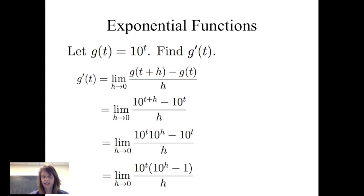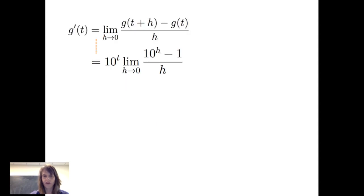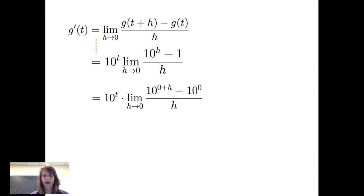I see that I have a common factor of 10 to the t in the numerator. As I factor that out, I see that 10 to the t does not depend at all on h. So therefore I can make that a coefficient of my limit. I've got 10 to the t times the limit as h goes to 0 of 10 to the h minus 1, all over h. I'm going to rewrite that limit expression as 10 to the t times the limit as h goes to 0 of 10 to the 0 plus h minus 10 to the 0, all over h. Which is just the limit definition of derivative — I'm evaluating the derivative of 10 to the t specifically when t is equal to 0. So I can say that the derivative of my exponential function 10 to the t is simply 10 to the t times g prime evaluated at 0.